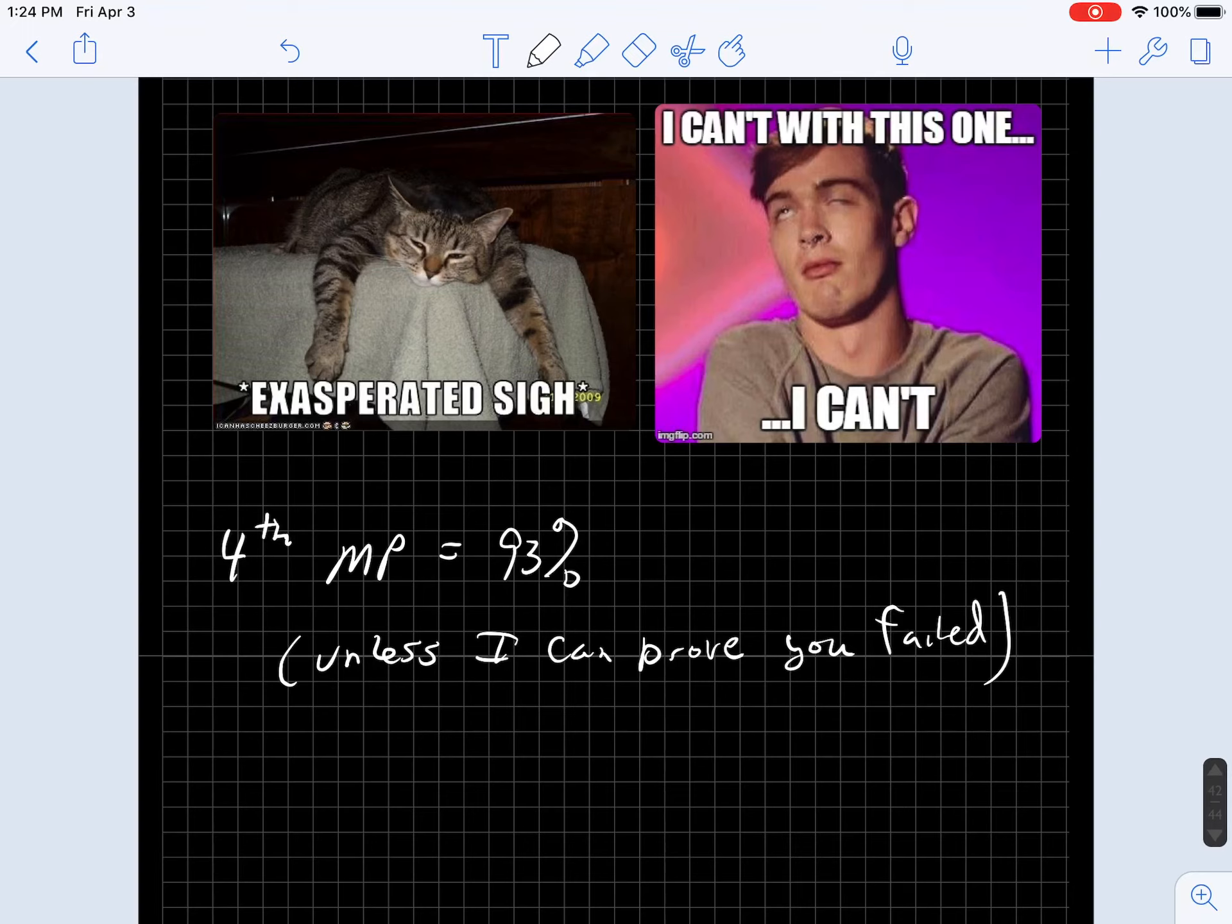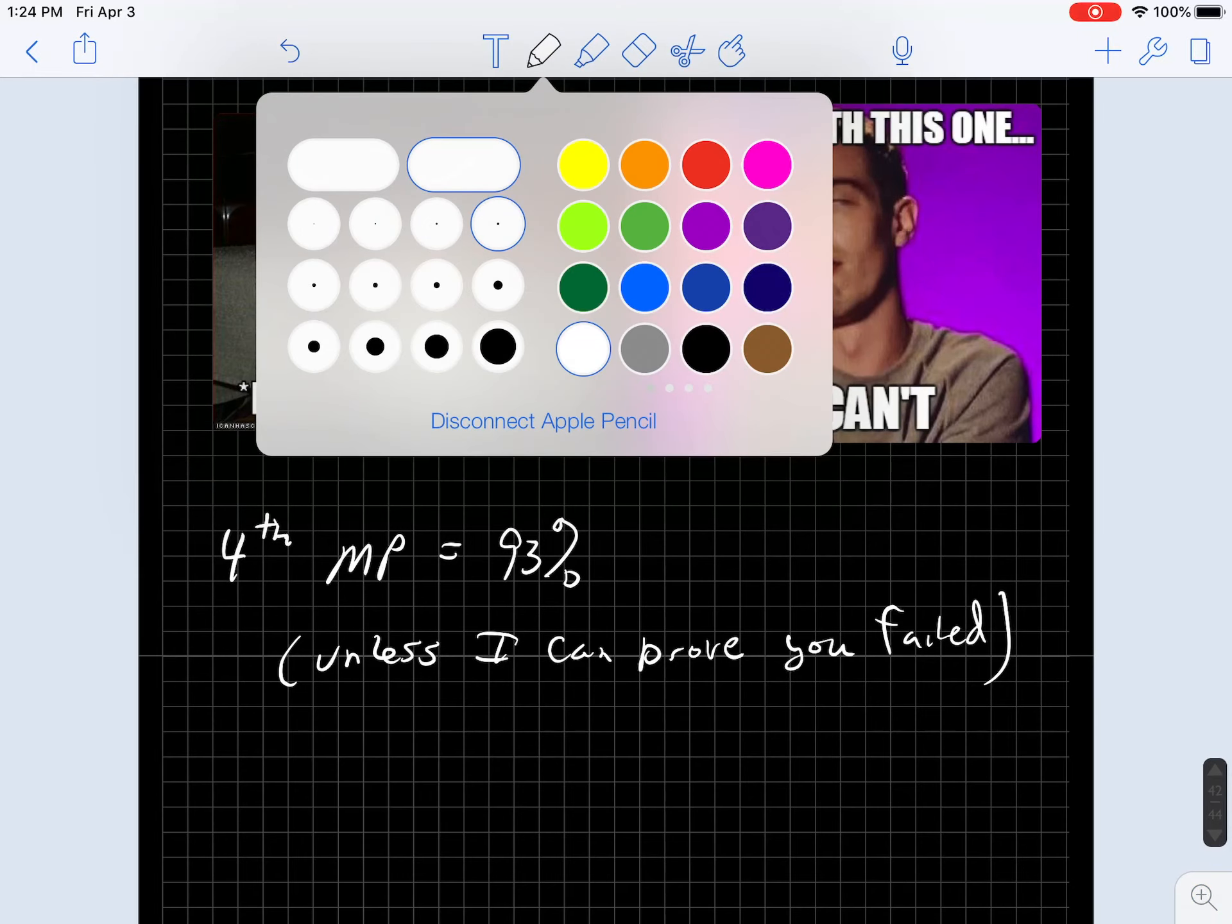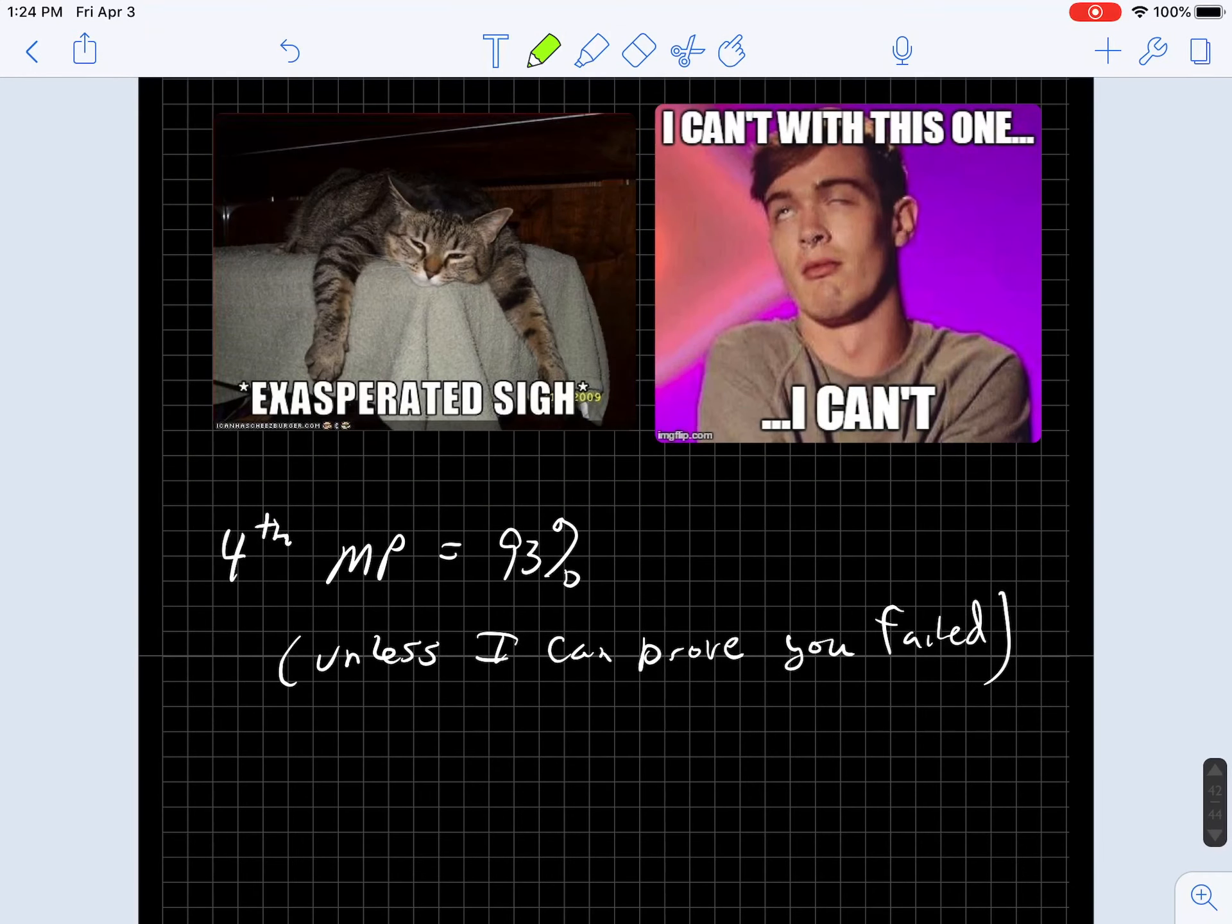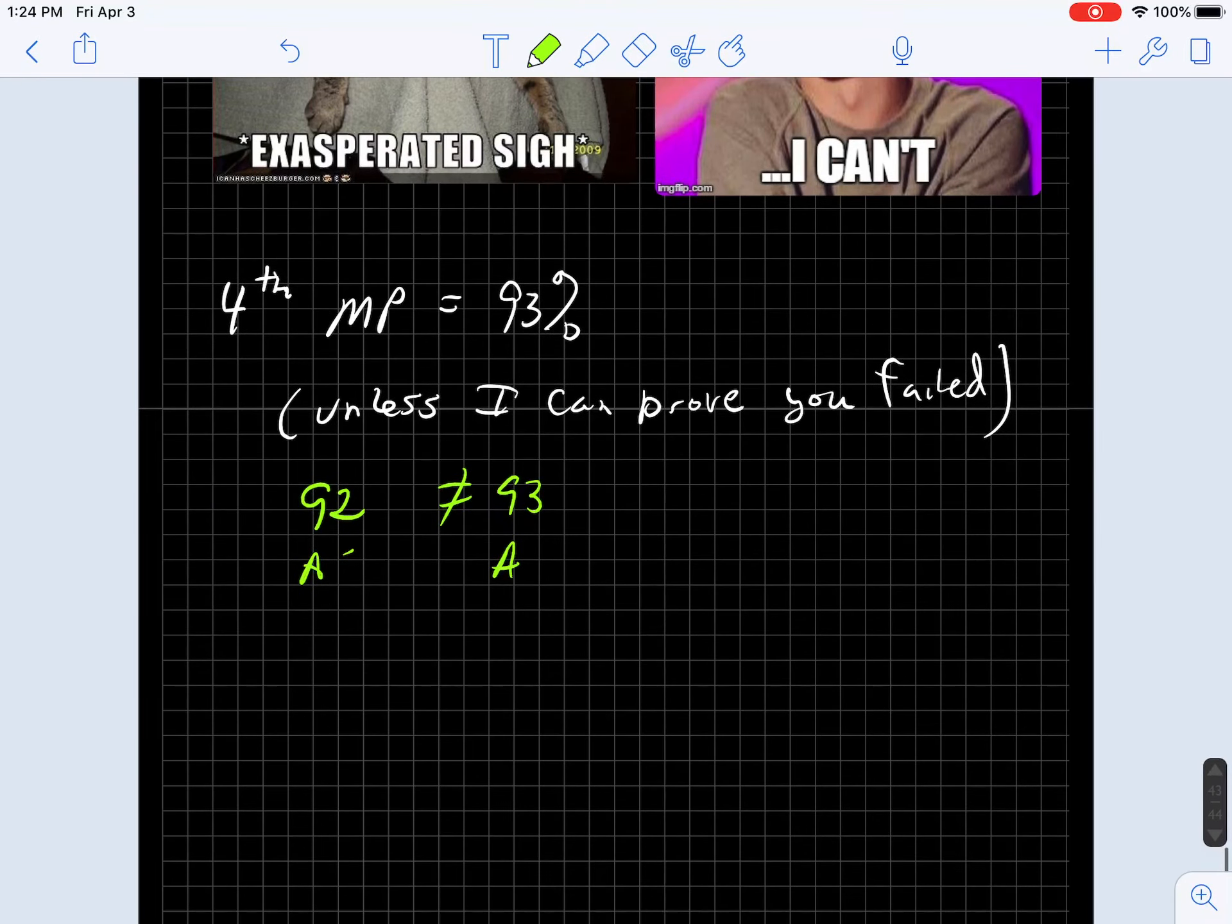But again, I have to believe that some of these things are going to be taken with cynicism. For instance, a person with a 92 right now cannot get a 93. And statistically, I don't consider an A minus 92 to be any different than a 93 A, but that is not possible. But if you have a 67% right now, then you get a 93 for the fourth marking period, and that brings you up to a 73. So you go from a D to a C, a full letter grade higher.